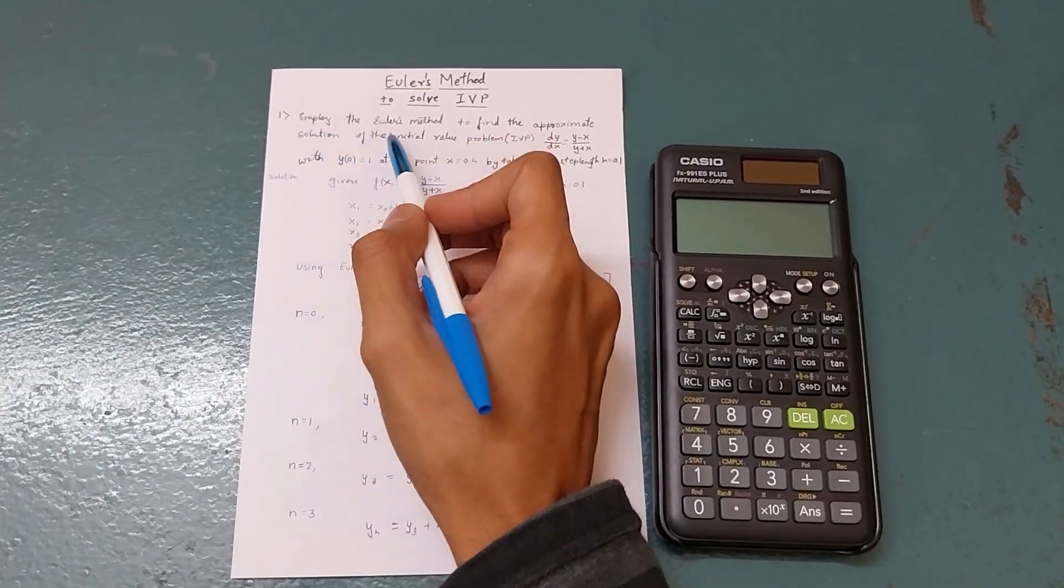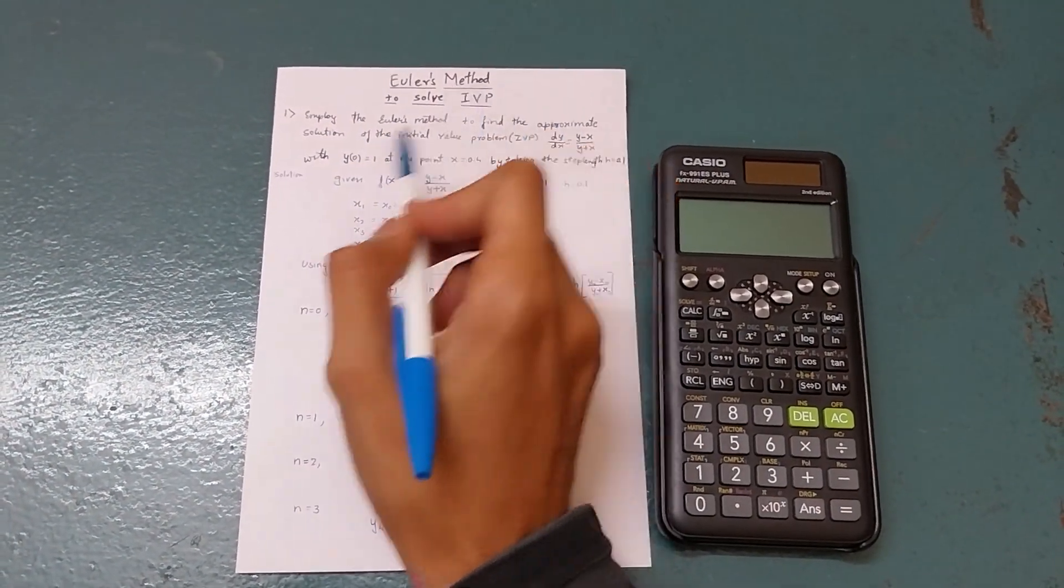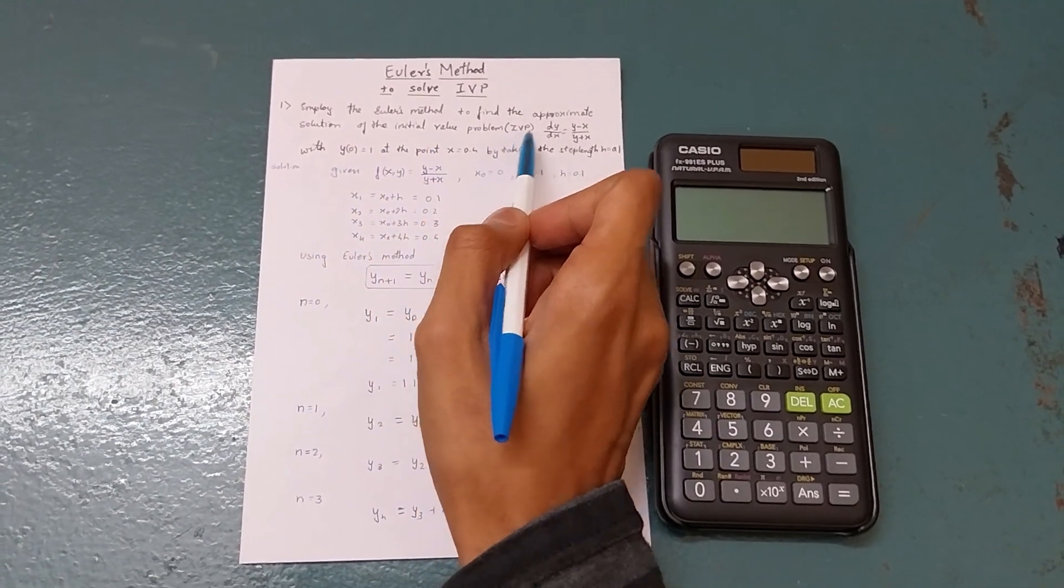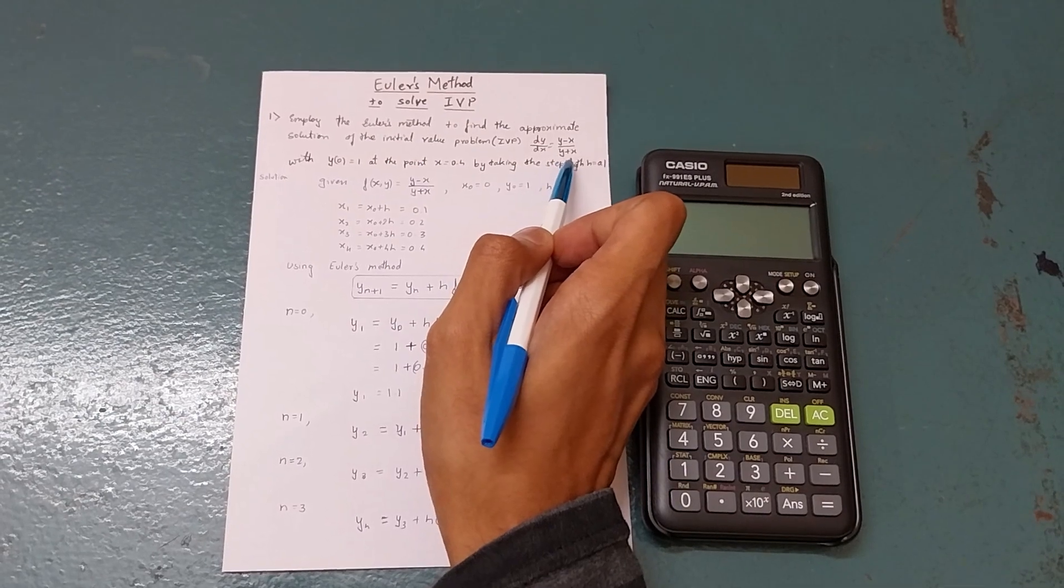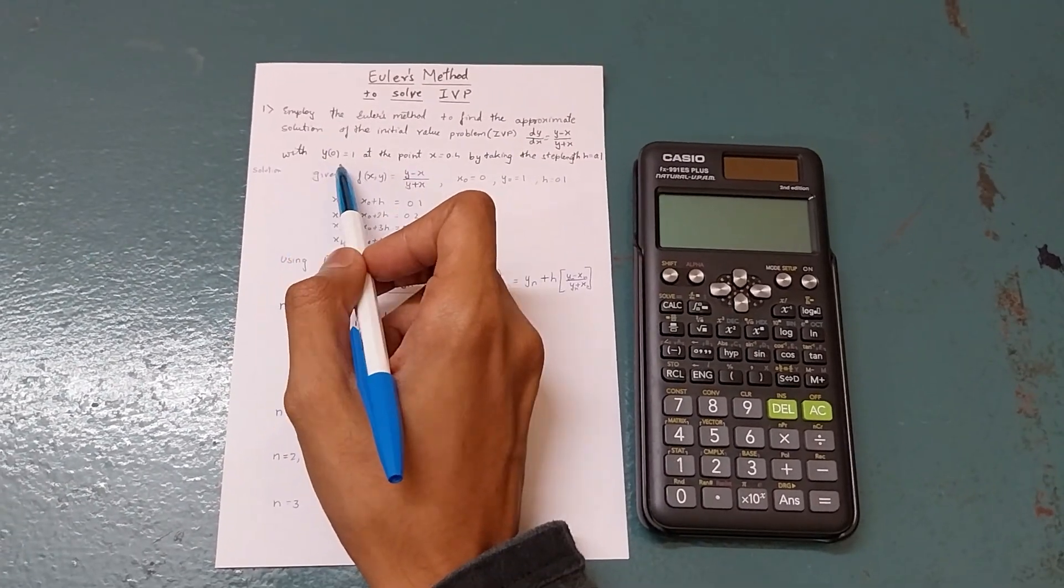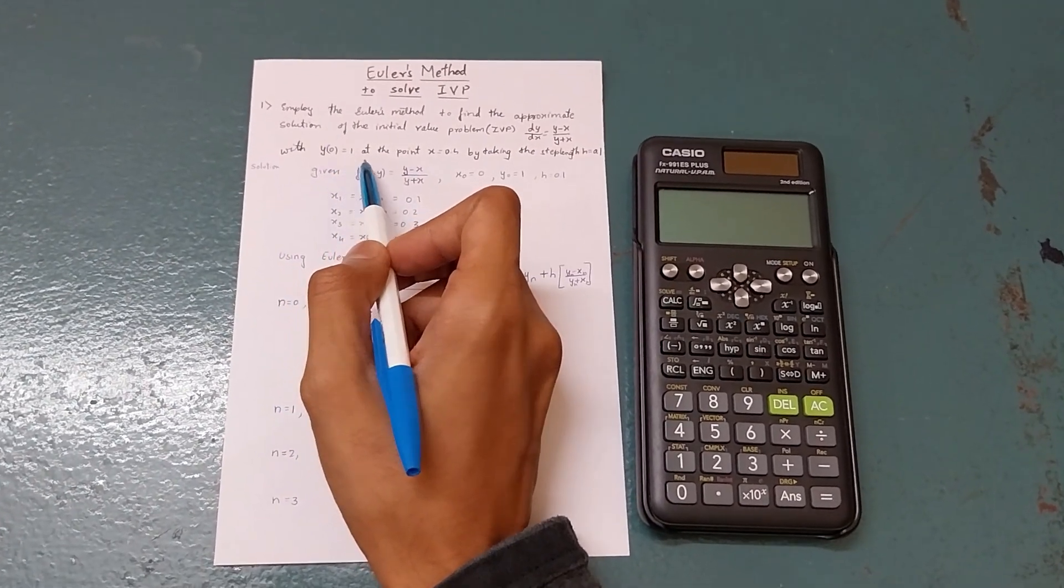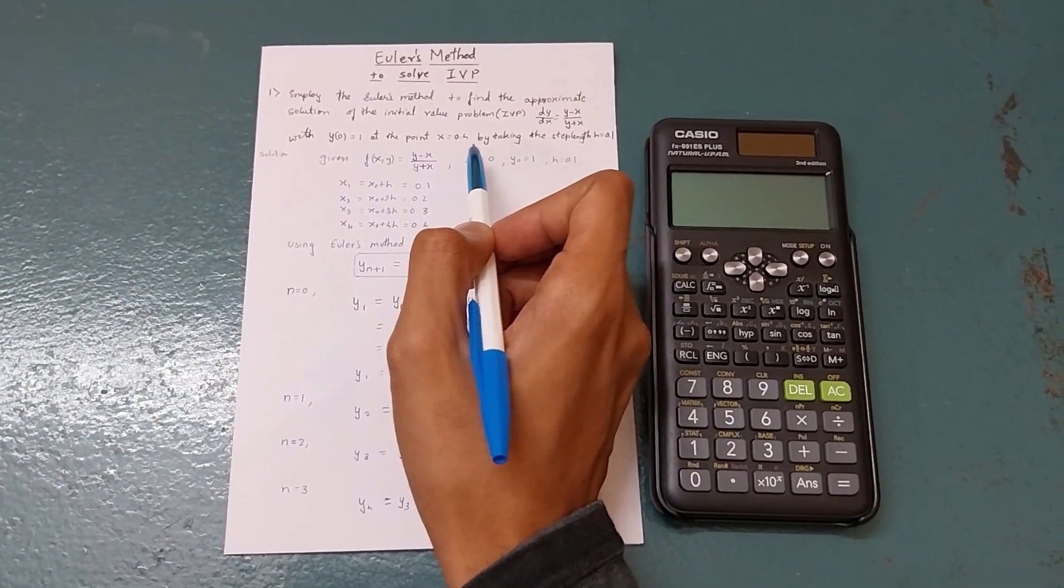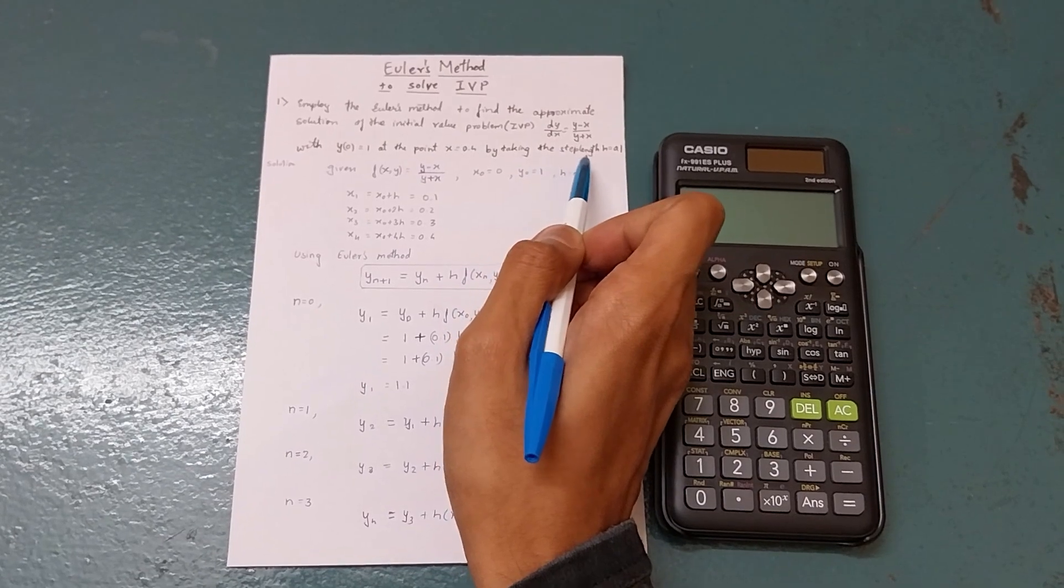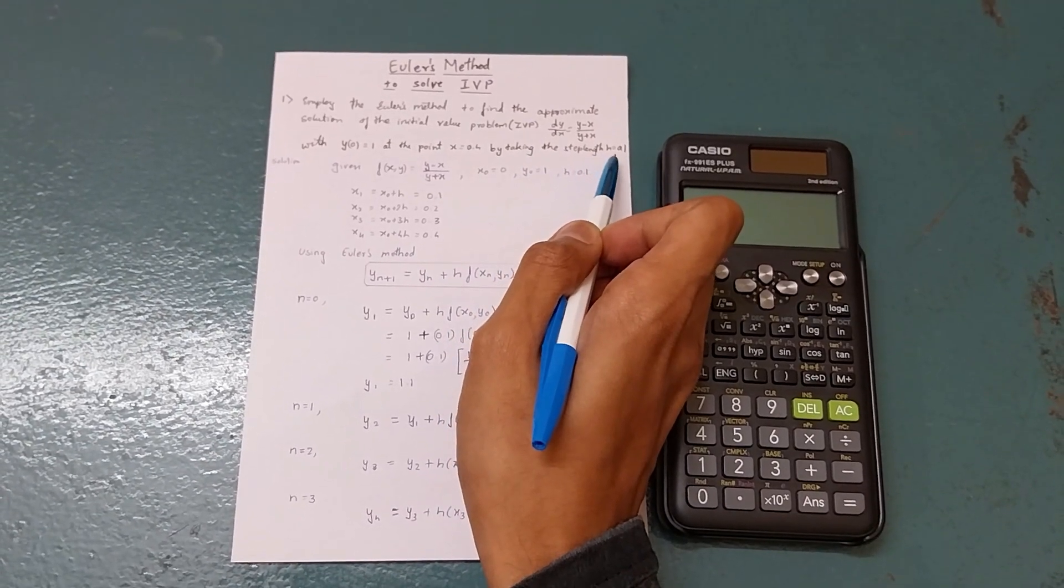Given question: employ the Euler's method to find approximate solution of the initial value problem dy/dx equals y minus x divided by y plus x. This is the function with y of 0 equals 1 at the point x equals 0.4.